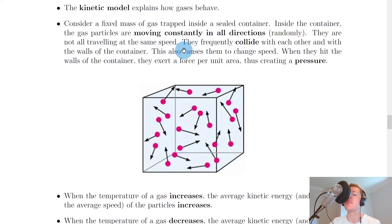They are not all travelling at the same speed. They frequently collide with each other and with the walls of the container. This also causes them to change speed. When they hit the walls of the container, they exert a force per unit area, thus creating a pressure.